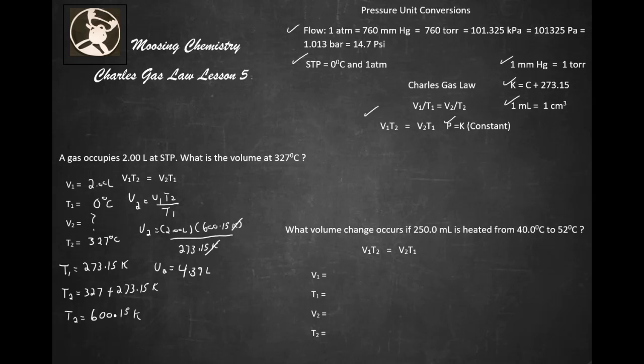Excellent. All right, so let's look at our next problem here, guys. Okay, so our next problem clearly states what volume change occurs if 250 milliliter is heated from 40 Celsius to 52 degrees Celsius. So our T1 temperature is 40.0 degrees C. T2 temperature is 52 degrees C. Our volume is 250 milliliter to start with.